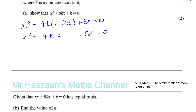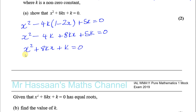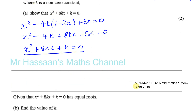That is 8kx of course, because minus 4k times minus 2x gives plus 8kx — minus times minus is plus. Then minus 4k plus 5k gives plus k, so the full expression is x squared plus 8kx plus k equals 0. We can see how we have shown this becomes that, and we can now continue on with the next part of the question.